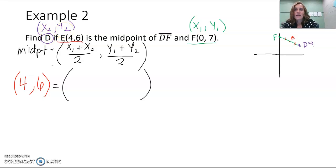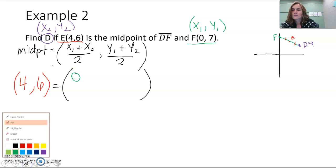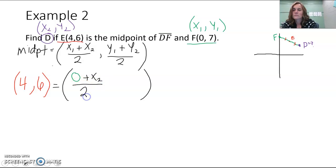So let's go ahead and plug in those coordinates of F for x₁ and y₁. So 0 plus x₂ we don't know, over 2, and our y₁ is 7 plus y₂ we don't know, divided by 2.